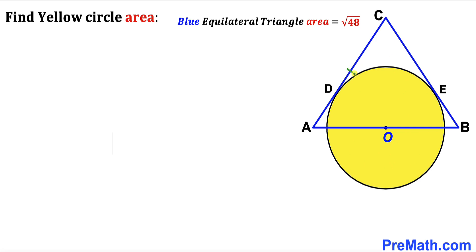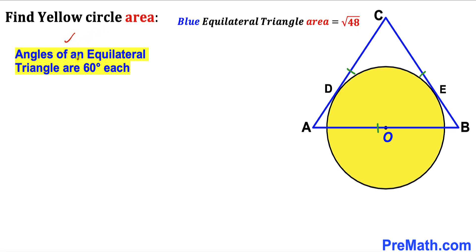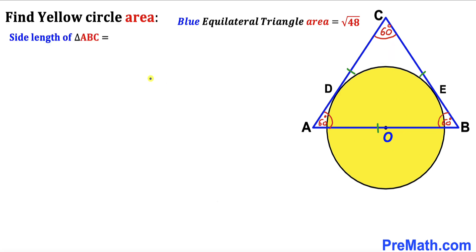An equilateral triangle means all side lengths are equal in length. Let's recall the crucial fact: angles of an equilateral triangle are 60 degrees each, so this angle is 60 degrees, this angle is 60 degrees, and likewise this angle is 60 degrees as well. Let's assume the side length of this blue equilateral triangle is A units — so all three side lengths are lowercase A.